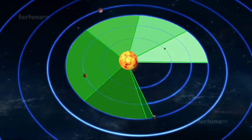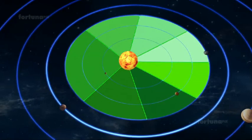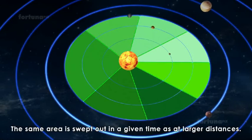The planet moves slower when away from the sun, so the same area is swept out in a given time as at larger distances.